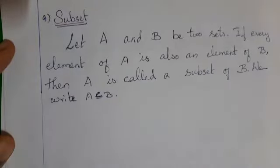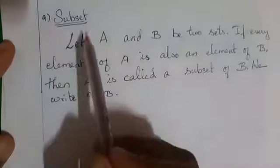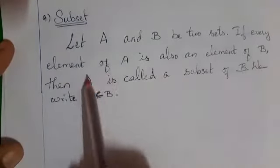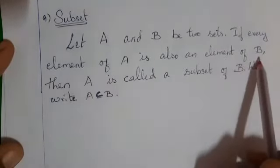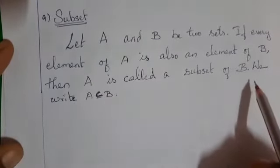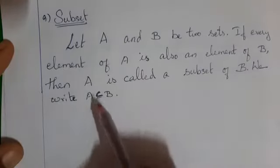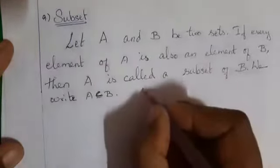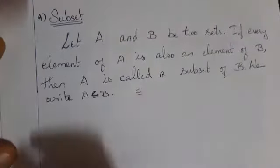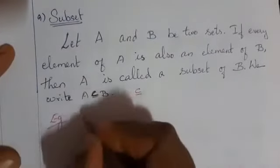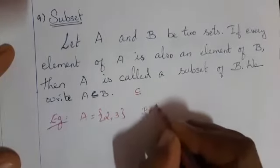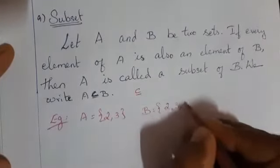Next type: subset. Let capital A and capital B be two sets. If every element of A is also an element of B, then A is called a subset of B. We write A is a subset of B — you must write it like this. Now see one example. Take A is equal to {2, 3} and B is equal to {2, 3, 4, 5}.